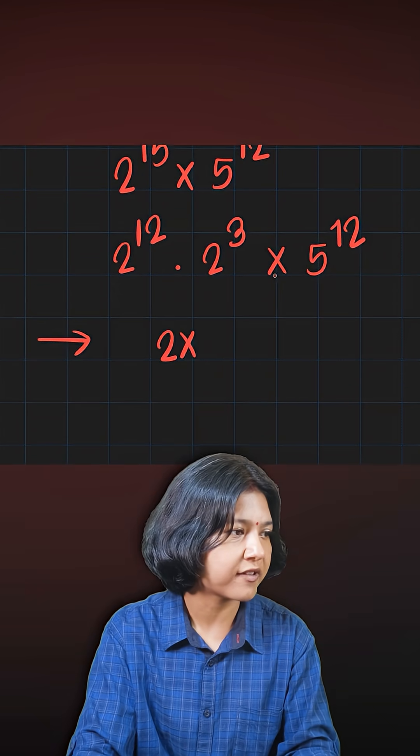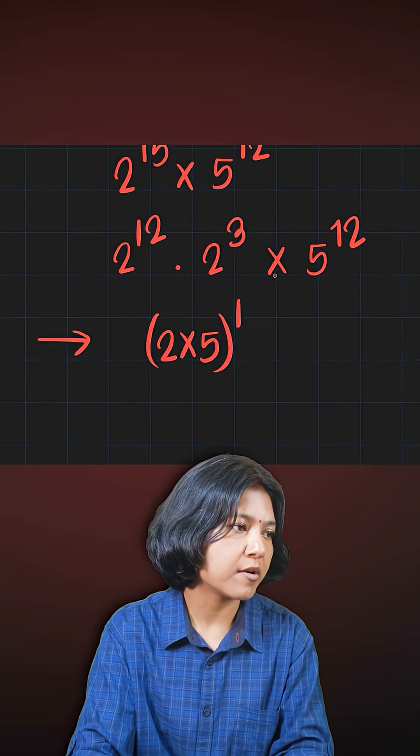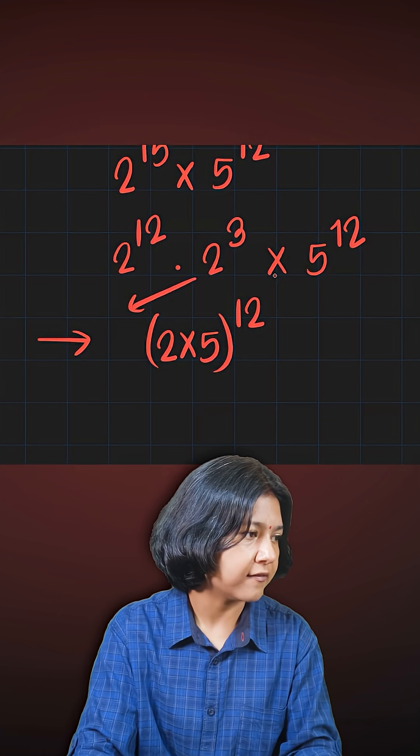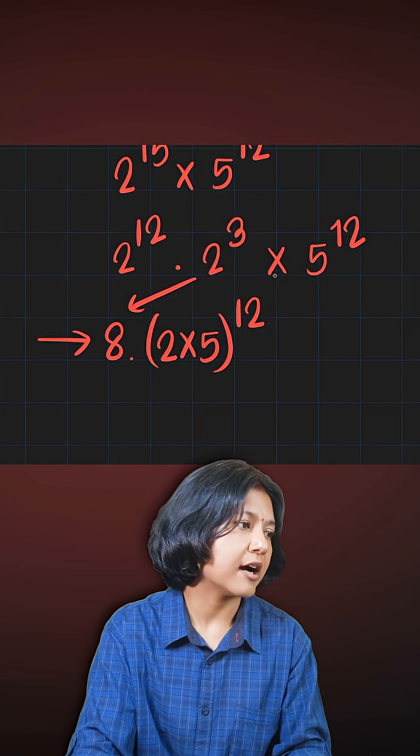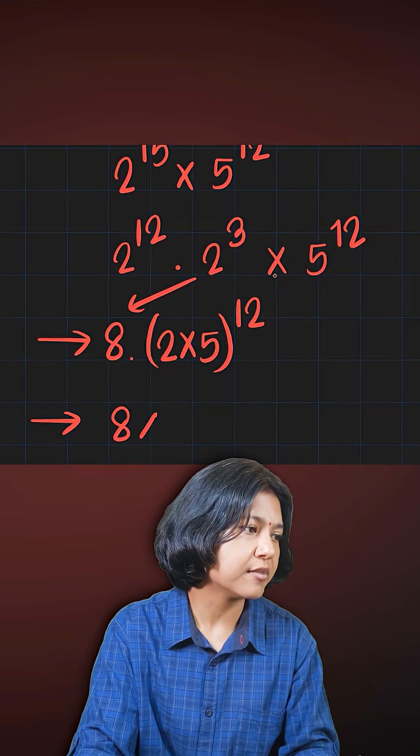So 2 into 5, both of them have this common power 12. 2 to the power of 3 is something I can evaluate and write it as 8. So I just have 8 as one number.